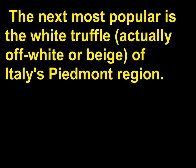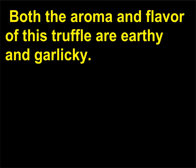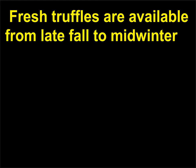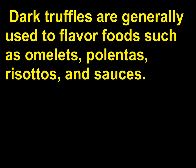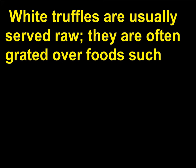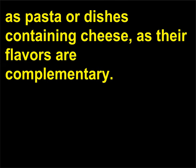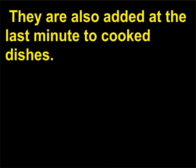The flesh of the black diamond appears to be black, but it is actually dark brown and contains white striations. The flesh has an aroma that is extremely pungent. The next most popular is the white truffle — actually off-white or beige — of Italy's Piedmont region. Both the aroma and flavor of this truffle are earthy and garlicky. Fresh truffles are available from late fall to midwinter and can be stored in the refrigerator for up to three days. Dark truffles are generally used to flavor foods such as omelets, polentas, risottos, and sauces. White truffles are usually served raw, often grated over pasta or dishes containing cheese, and are also added at the last minute to cooked dishes.